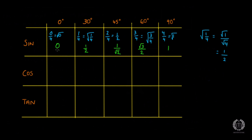The green writing is the answer for sine. So: sine 0 is 0, sine 30 is a half, sine 45 is 1 over root 2, sine 60 is root 3 over 2, and sine 90 is 1. Now for cos, you're probably thinking we need to do all of that again — no. Cos is very simple.